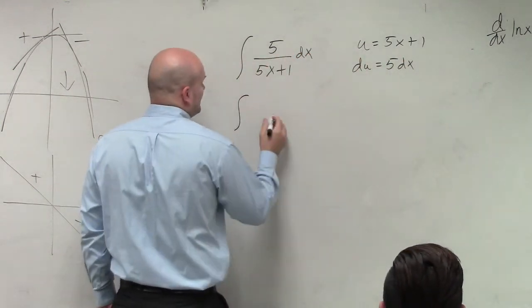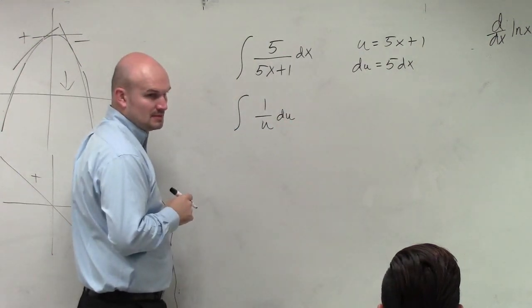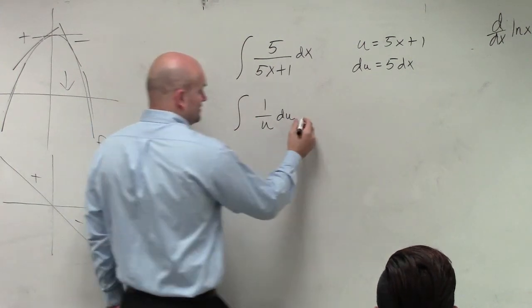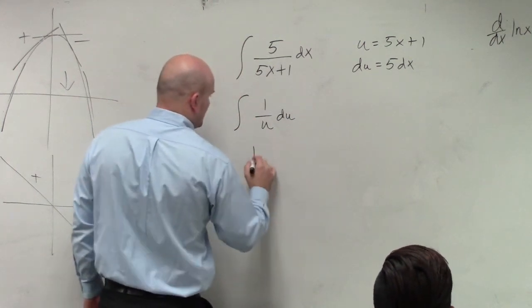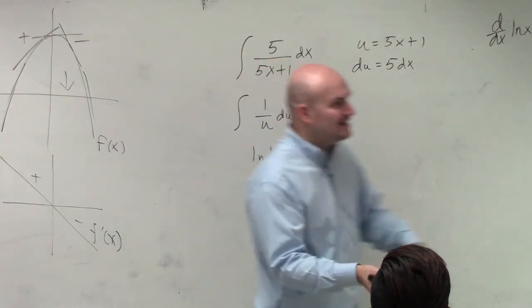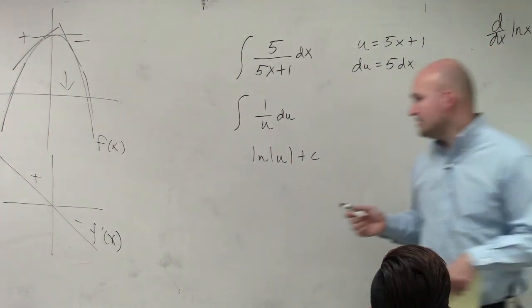basically what we have here is 1 over u du, which here I notice is going to integrate to ln absolute value of u plus c. And then I can just now take in what my value of u is, which is 5x plus 1.